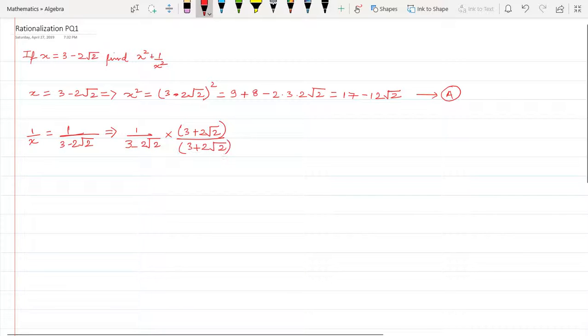And that is equal to 3 plus 2 root 2 divided by 3 squared, that is 9, minus 2 root 2 squared, that is 8. And this becomes equal to 3 plus 2 root 2 the whole thing divided by 1. But this is not my Part B.